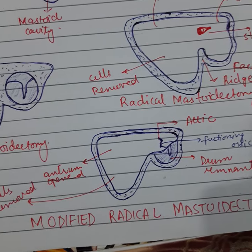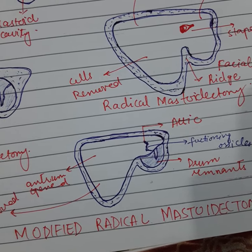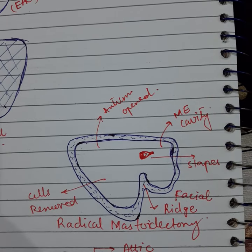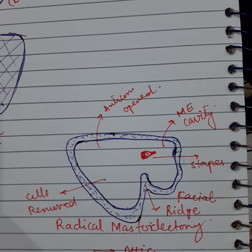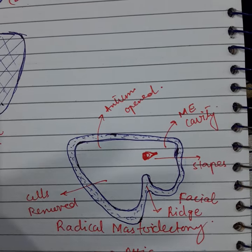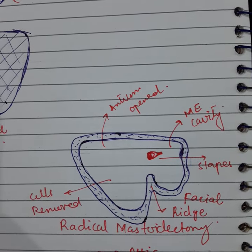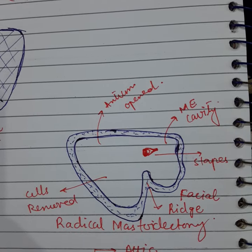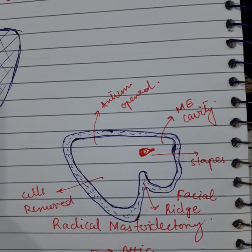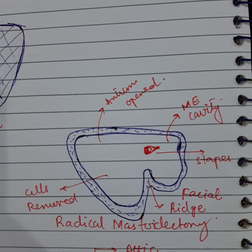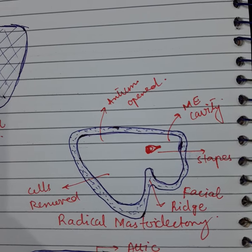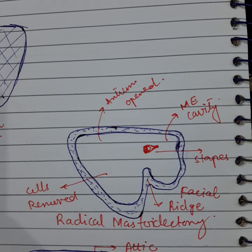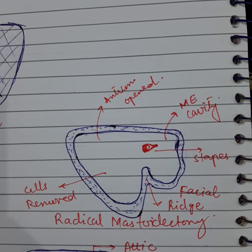Indications of radical mastoidectomy are: when cholesteatoma is extensively present in the whole of the mastoid cavity and the middle ear, if previous attempts to eradicate the chronic inflammatory disease or cholesteatoma have failed, as an approach to petrous apex removal, removal of the glomus tumor, middle ear tumors, and carcinoma of the middle ear.